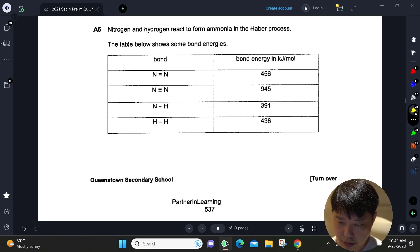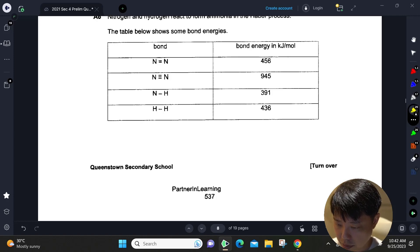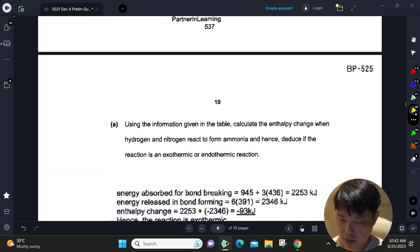Okay, so for A6, the sixth structured question, sodium and hydrogen react to form ammonia in the Haber process. We have this bond energy in this table given to us. Using the table information, calculate enthalpy change when hydrogen and nitrogen react to form ammonia and basically deduce whether it's exothermic or endothermic.